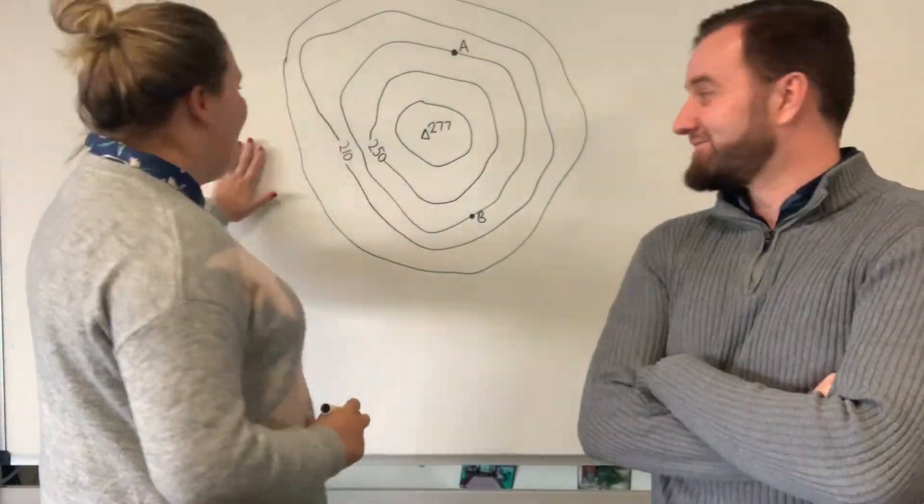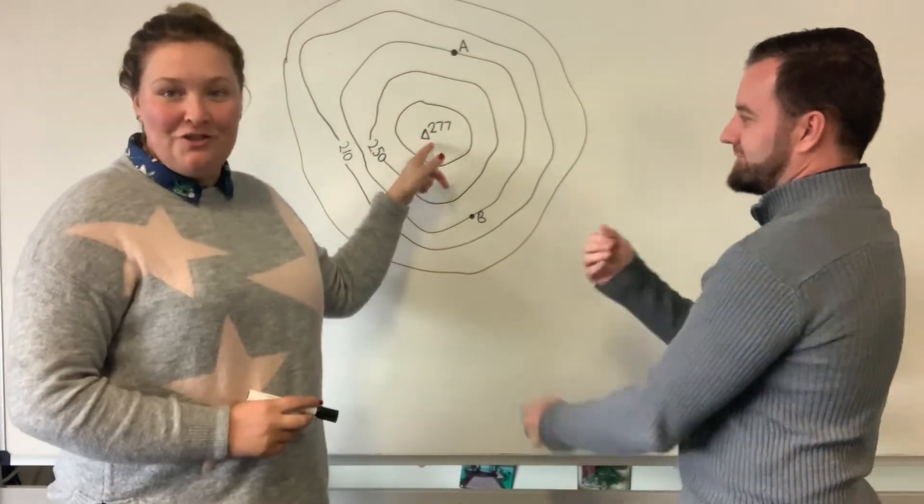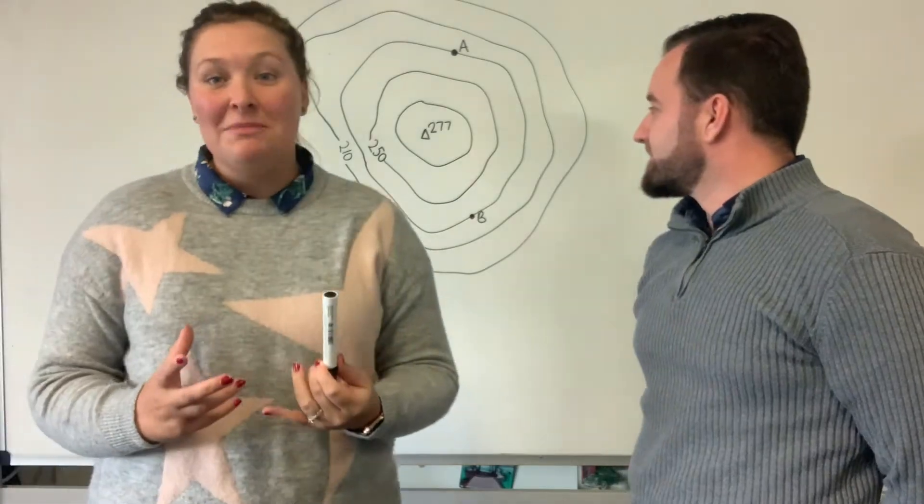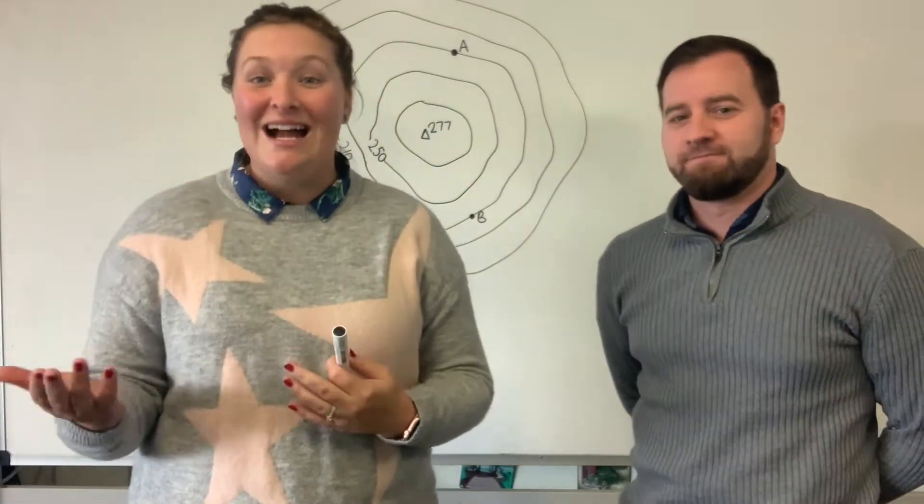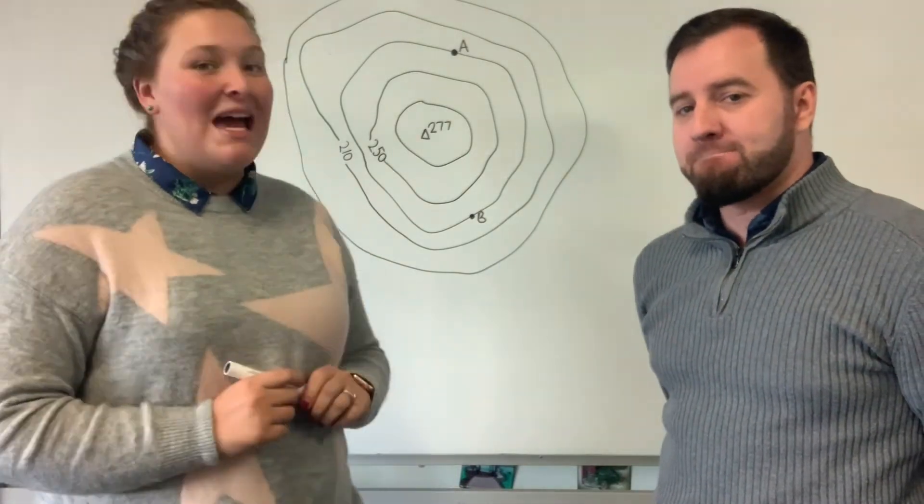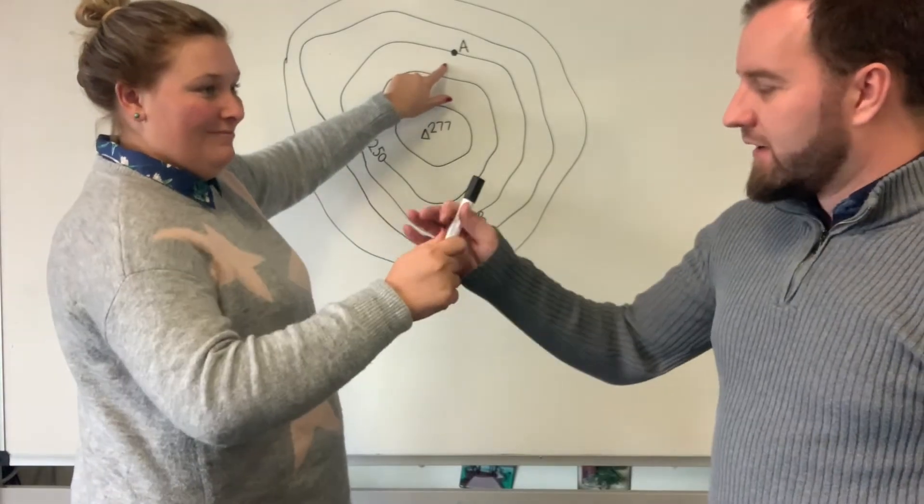So we're here at the whiteboard and we've got our pretty easy topographic map. We've got our trig station at the top, 277 metres. And you can see as we work out, we're working at an interval of 20 metres. So each contour line is 20 metres apart. What we're going to do first, Mr. Cizio, is going to show you how to work out the aspect for point A, which is just here. Thank you, Samantha.